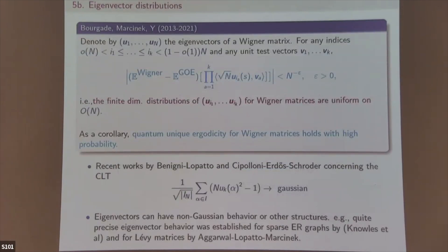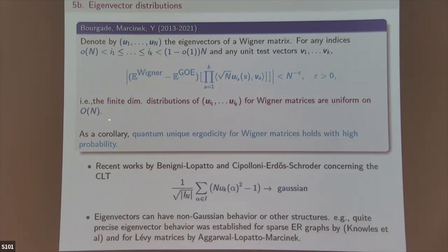About eigenvector distribution: this is work from about eight years ago. We prove that if you take k eigenvectors and look at their joint probability distribution — projecting onto a finite-dimensional space and looking at inner products — for any k eigenvectors, the finite-dimensional distribution is the same as under the orthogonal group. This is for any Wigner matrix compared with GOE.